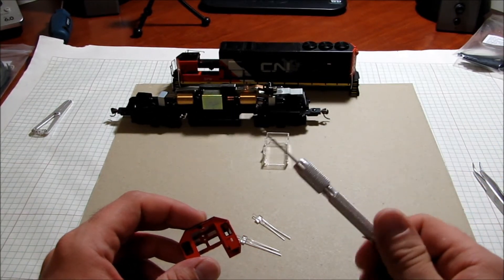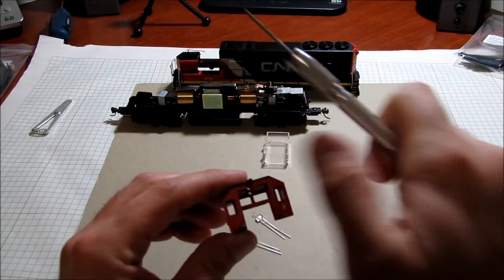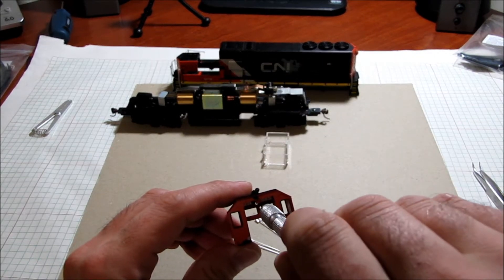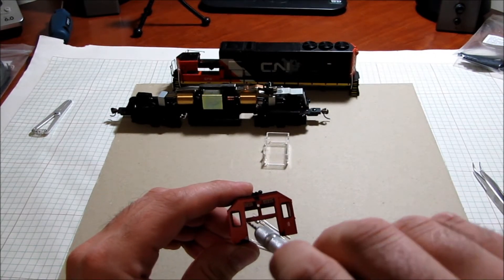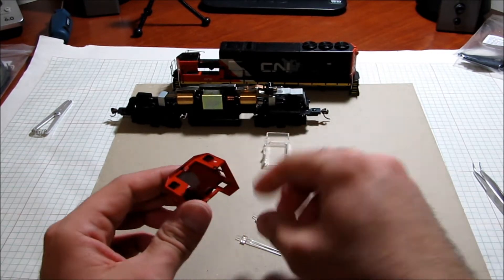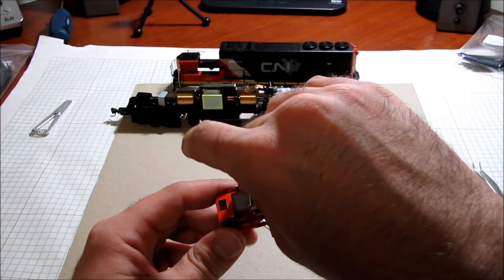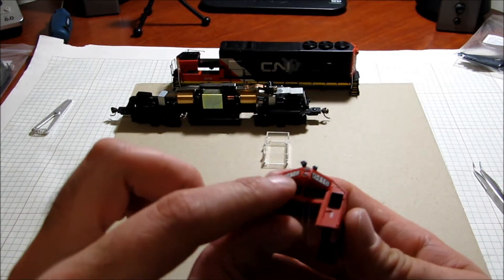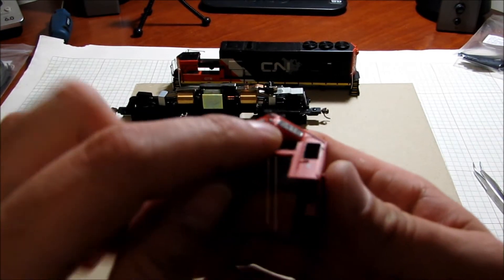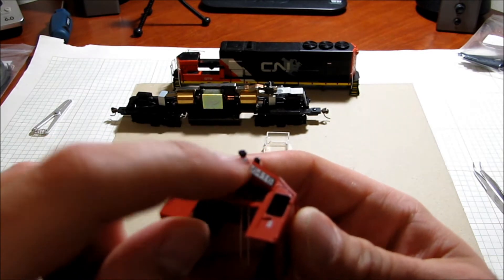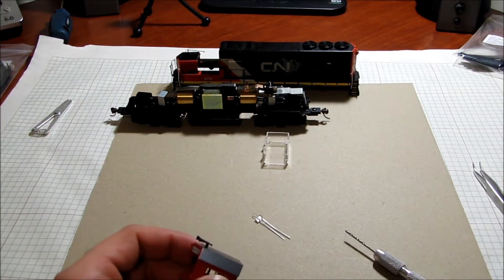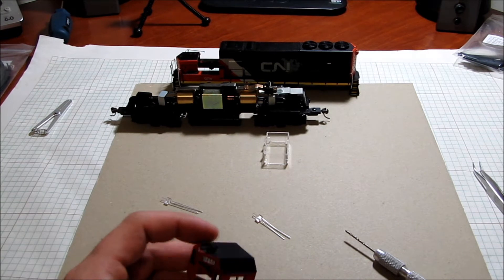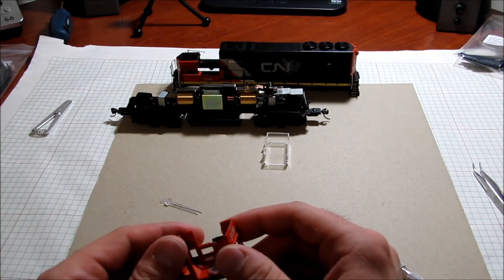I took my pin vise with a two millimeter drill bit and very carefully drilled those holes out to make them wider so the lights will slide right in. I can still use the pre-existing little tiny plastic lenses that came with the train.